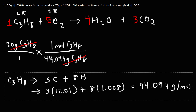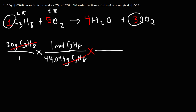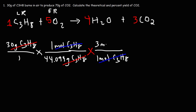Next, we change the substance from propane to carbon dioxide using the molar ratio. From the balanced equation, one mole of propane generates three moles of CO2. So if we consume one mole of propane, three moles of CO2 are produced. We place one mole of propane on the bottom so the units cancel, and three moles of CO2 on top.